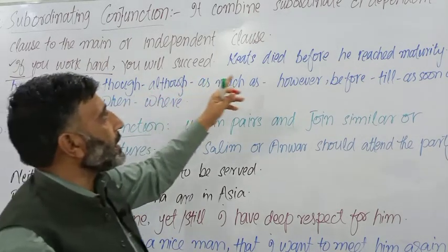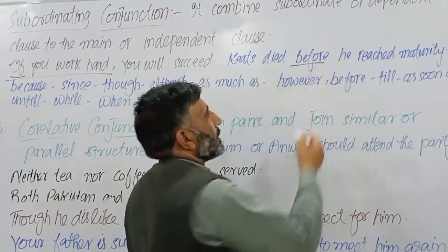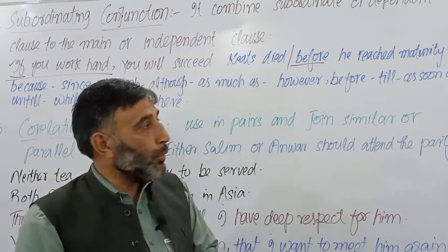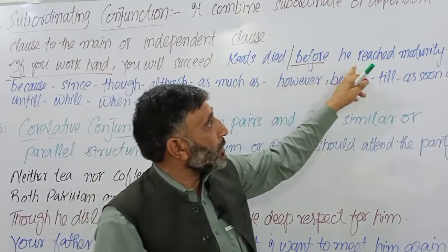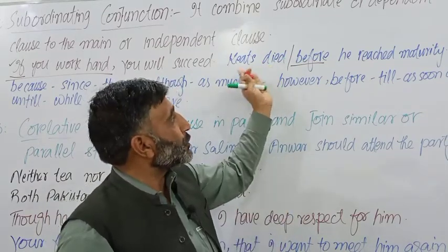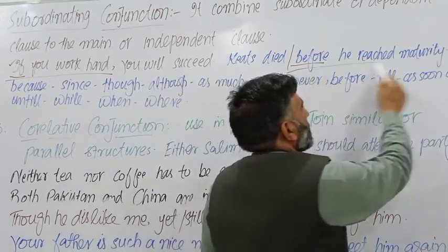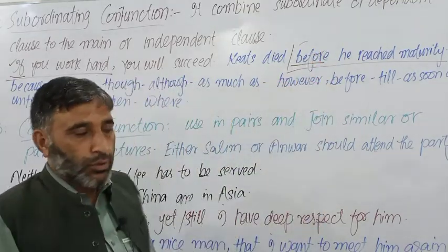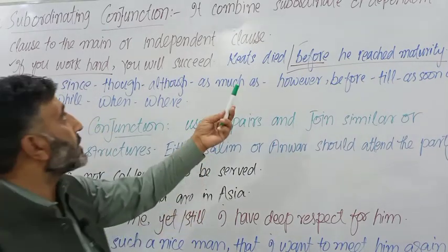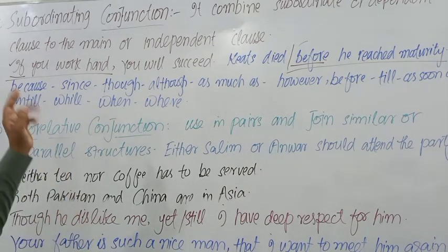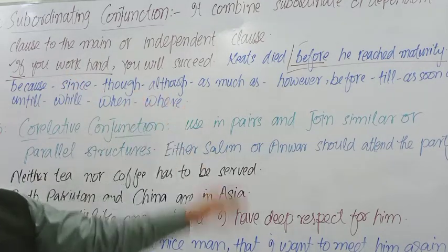اسی طرح: 'Keith died before he reached maturity' — یعنی وہ بلوغت تک پہنچنے سے پہلے مر گیا. 'Keith died' یہ main class ہے اور 'before he reached maturity' یہ subordinate اور dependent class ہے. 'Before' یہ subordinating conjunction ہے. Compound sentence میں دونوں main class ہوتے ہیں، لیکن complex sentence میں ایک main class اور ایک subordinate class ہوتا ہے.